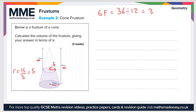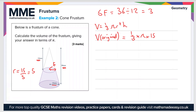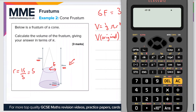Now it's just a case of working out the volumes of the original cone and the one that's been removed. The volume of a cone is V = one-third π r² h. For the larger cone, that's one-third times π times 15 squared times 36. If we plug that into the calculator — one-third times π times 15 squared times 36 — that gives us 2700π.